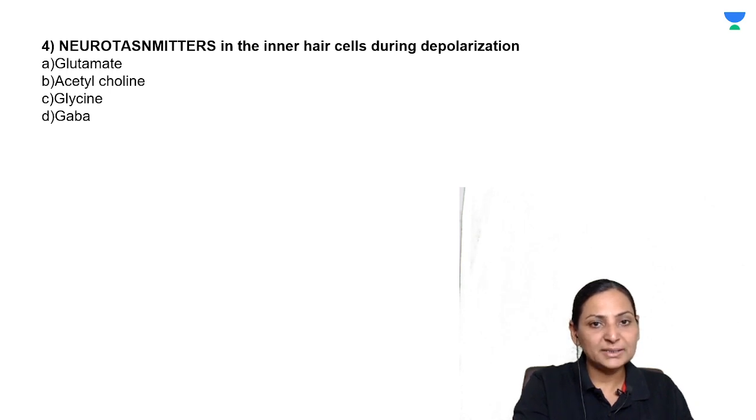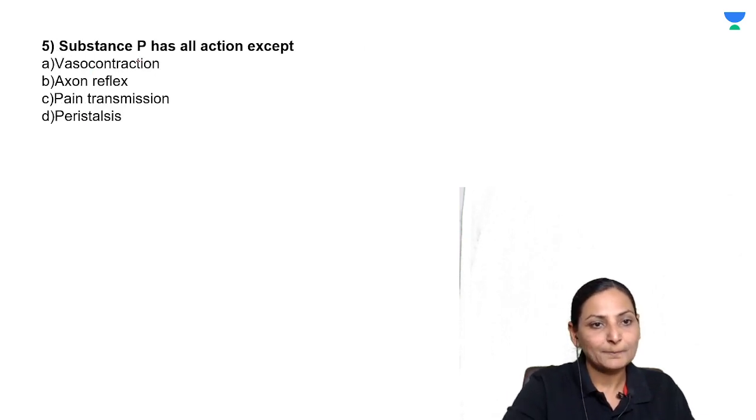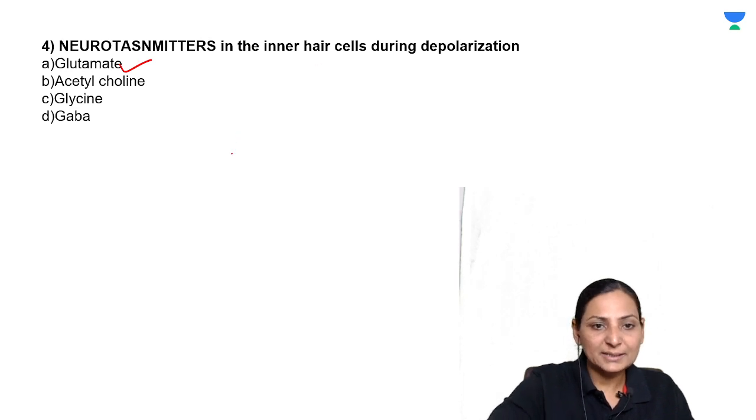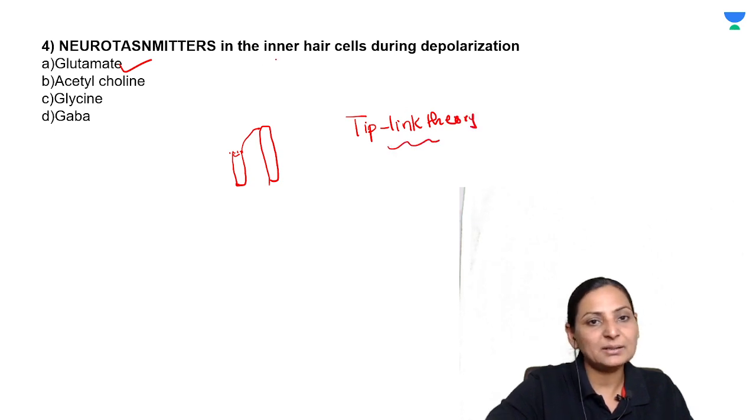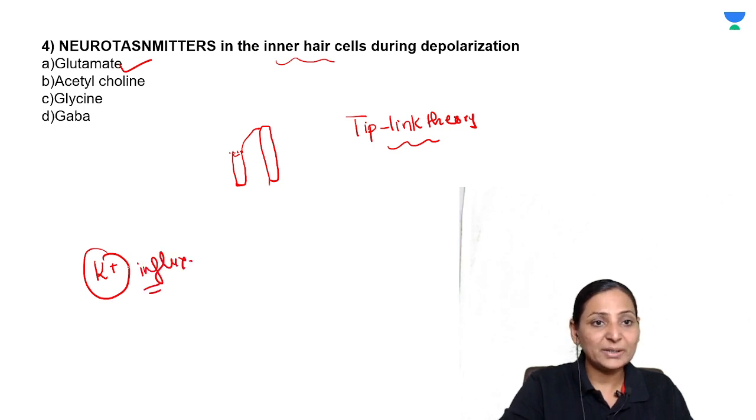The neurotransmitter that is involved in the inner hair cells during depolarization is glutamate, acetylcholine, glycine, or GABA? The correct answer is glutamate. Remember in the inner hair cells, the hair cells have got stereocilia and a big kinocilium. This kinocilium is going to be attached - the stereocilia is going to be attached to this kinocilium. This is also called the tip link theory. The depolarization is not only going to involve calcium but also potassium influx and not sodium. Everywhere else you get sodium, but it's not sodium and neurotransmitter is glutamate.